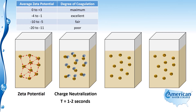As we lessen the negative charge — as the negative numbers get smaller — going up to fair coagulation, the range is minus 10 to minus 5 millivolts. As we further reduce the zeta potential to a range of negative 4 to negative 1, we consider that to be excellent coagulation. Most plants operate in this slightly negative range because they don't want to add too much coagulant, which can pass through the plant and cause issues in the distribution system. Maximum coagulation is when the average zeta potential is in the range of zero to plus three millivolts.